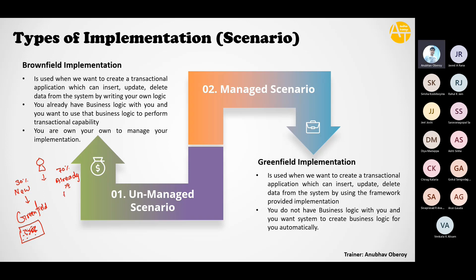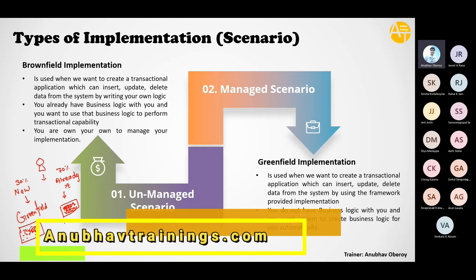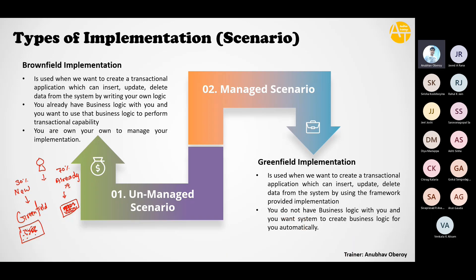Then there is a brownfield scenario: there is already something, and on top you want to add something. Think of somebody who already did some agriculture on this land, took out all the crop and burned it — now the field looks brown. That means there is already some kind of agriculture which was done on this land. That's brownfield implementation — 70 percent of cases. So ask yourself in your company: is there already some legacy code you want to integrate, or are you starting something new? All BTP fresh development is greenfield, but S/4HANA on-premise often has some code you want to reuse.